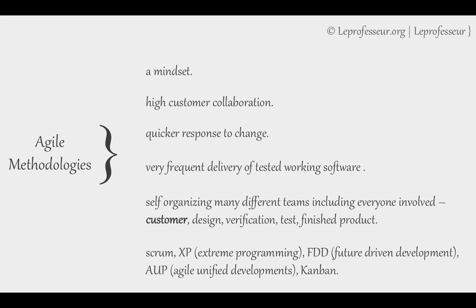In agile, different self-organizing teams are involved with the whole project: the customer is first and very important, then design teams, verification teams, testing teams, deployment teams, finished product teams, and to some extent marketing teams. These self-organizing teams help integrate changes quickly, respond rapidly, and lower the cost of project development. Some of the methodologies under the agile framework are Scrum, XP (Extreme Programming), FDD (Feature Driven Development), AUP (Agile Unified Process), and Kanban.